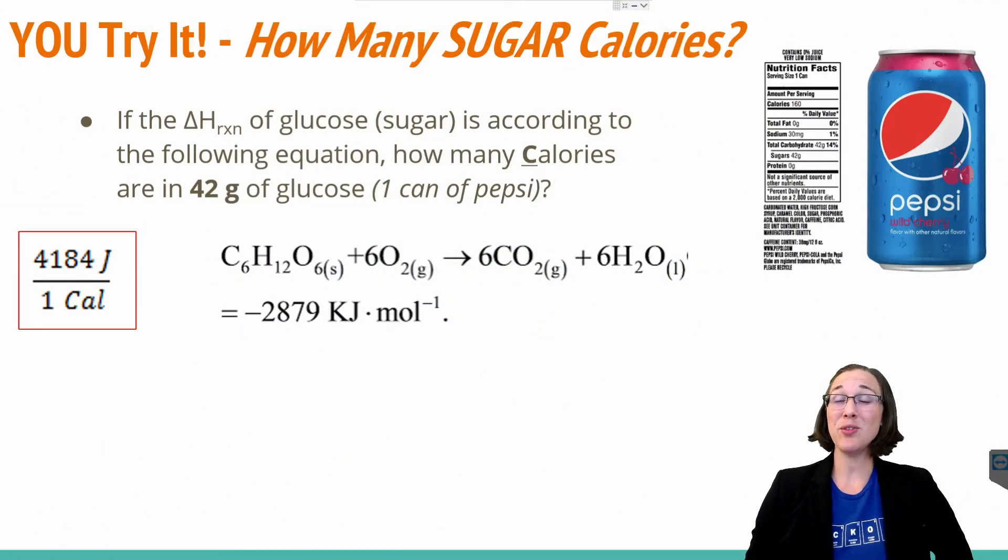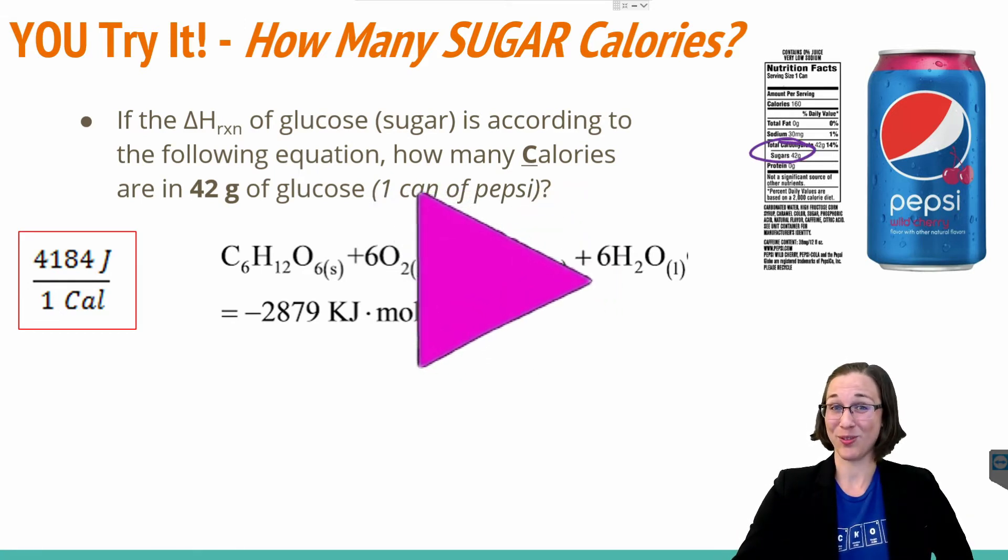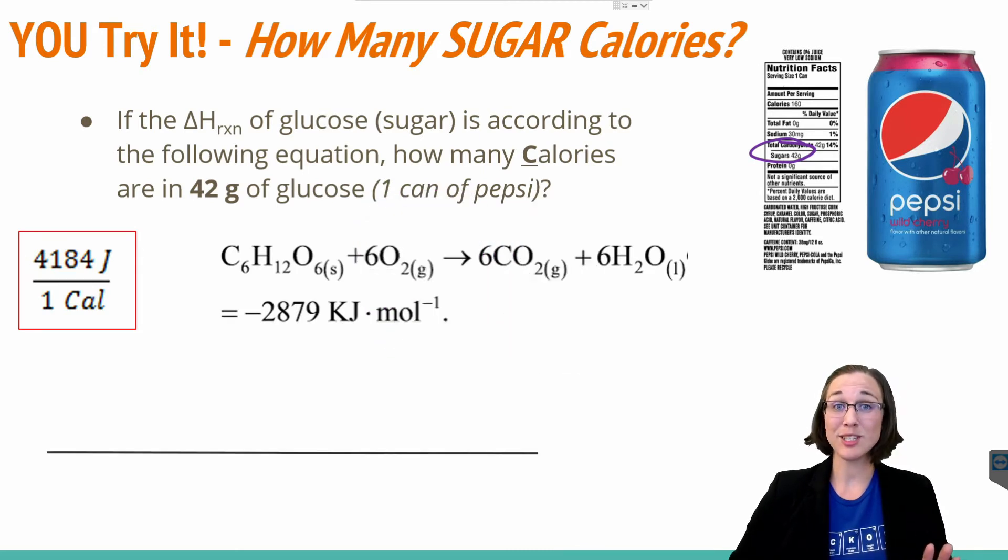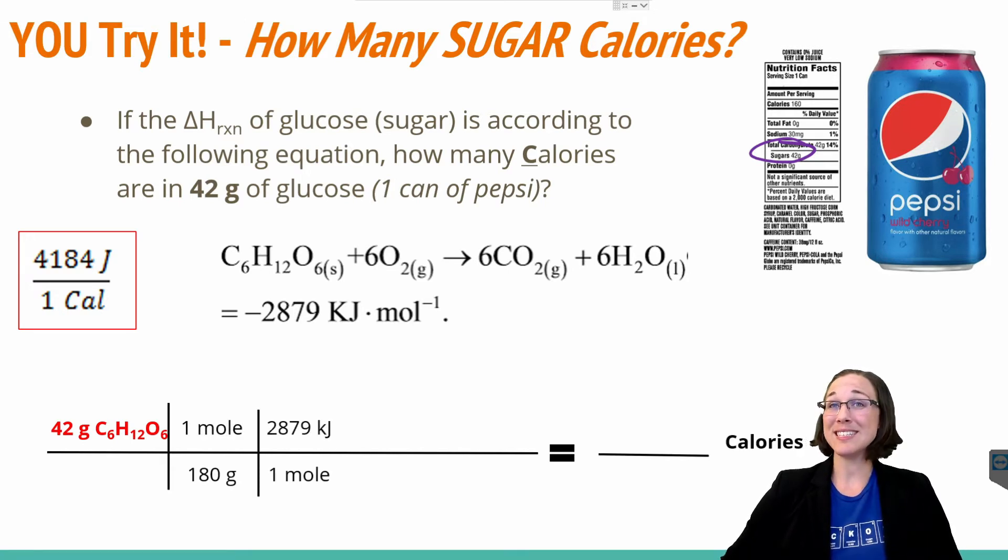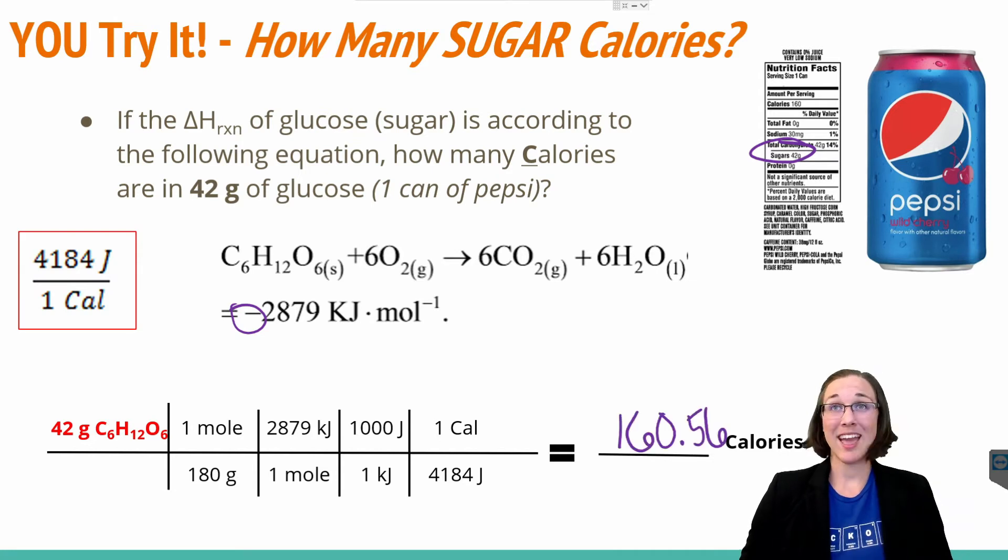Go ahead and pause the video here and see if you can figure out the number of sugar calories in one can of Pepsi. Ready? Go. Hopefully you followed the same exact setup. We're still going to need to put our given as the first thing on the line. In this case, it's 42 grams of glucose instead of 27. We're still going to have the same molar mass of 180 for that glucose molecule. And we're still going to use the same delta H of reaction for breaking down glucose, and also still negating that negative sign. Again, we can't have negative calories as our final answer. We need to convert the kilojoules to joules, so 1000 joules in one kilojoule. And we're using the same conversion factor as before, our one big C calorie per 4184 joules. And if you calculated correctly, you should have gotten 160.56 calories.